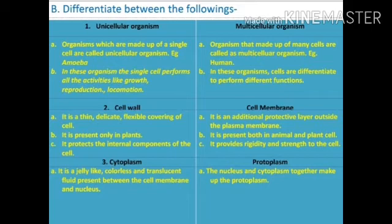Next: differentiate between the following. First, unicellular versus multicellular organisms. Unicellular organisms are made up of a single cell, e.g., Amoeba. In unicellular organisms, the single cell performs all activities like growth, reproduction, and locomotion. Multicellular organisms are made up of many cells, e.g., human beings. In multicellular organisms, cells are differentiated to perform different functions.